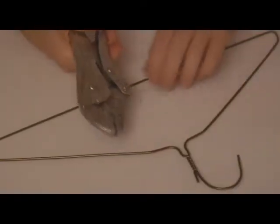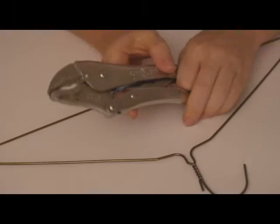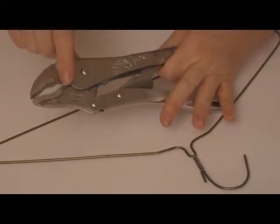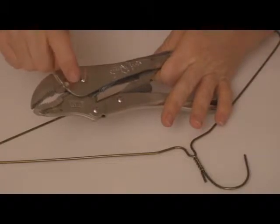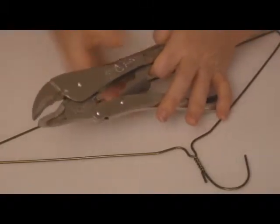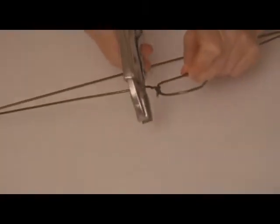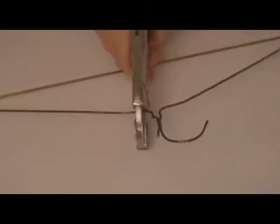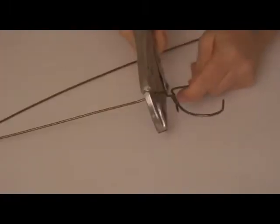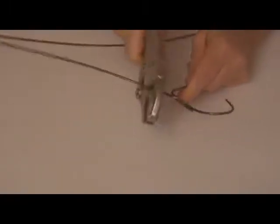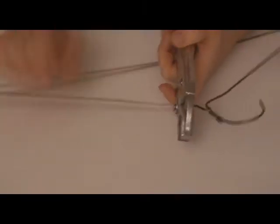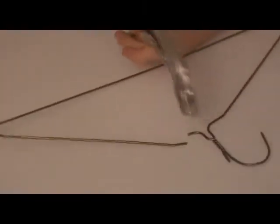To cut open the wire coat hanger you can use a pair of vise grips. Vise grips have a wire cutting part right on the very inside part of the jaw, right near the pin point. We're going to put the wire in as far as it can possibly go, clamp down and wiggle the wire back and forth a few times and the coat hanger is cut in two.